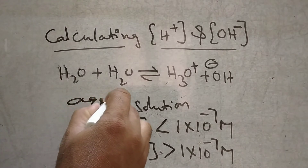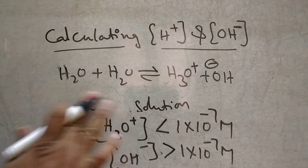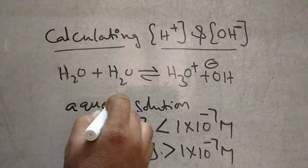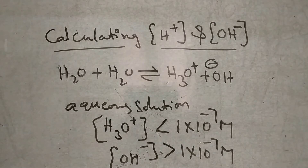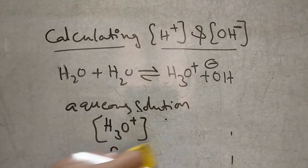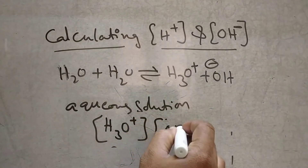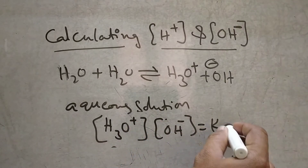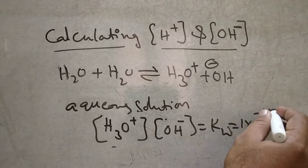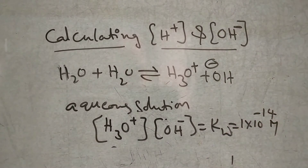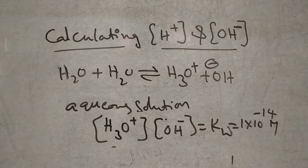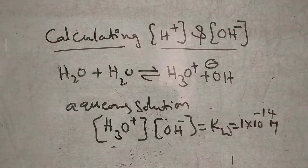In an aqueous solution, the H3O plus ions multiplied by OH minus ions are equal to KW, that is 1 into 10 to the power of minus 14 M. So the concentration of H3O plus ions and OH minus ions equals KW. What is KW? KW is nothing but the ionic product of water, or dissociation constant.